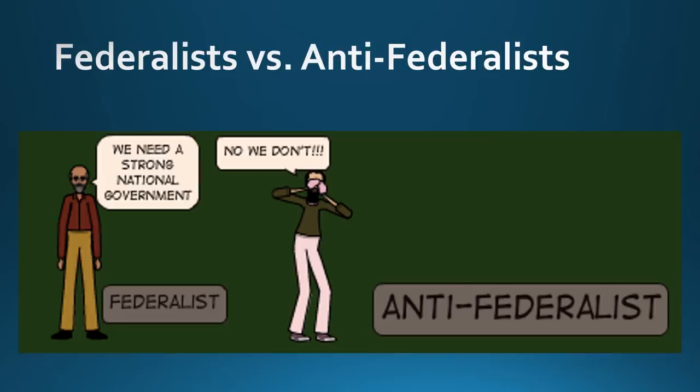The Federalists wanted the new constitution and a stronger central government. Something like Shays' Rebellion proved to them the need for that. Whereas Anti-Federalists strongly favored states' rights — they were very skeptical and suspicious of a national government. They felt like it would trample the states and destroy individual liberty.